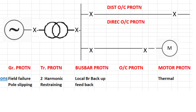Next is bus bar protection. For any fault in the bus, immediately all the breakers connected to the bus will trip. The bus bar protection will operate and give commands to all the breakers. Local breaker failure (LBB) commands will come to the bus bar protection, and it will trip all the breakers connected to the bus.